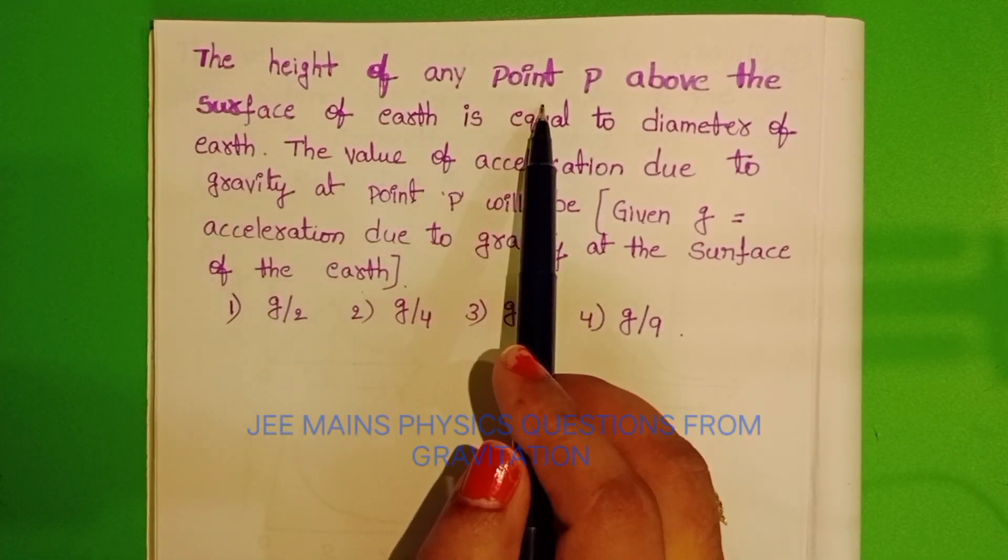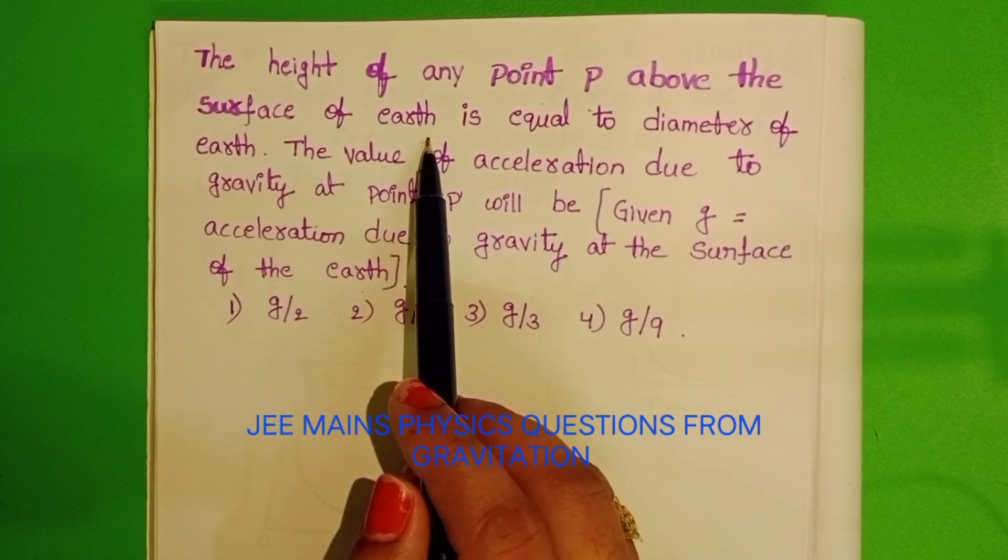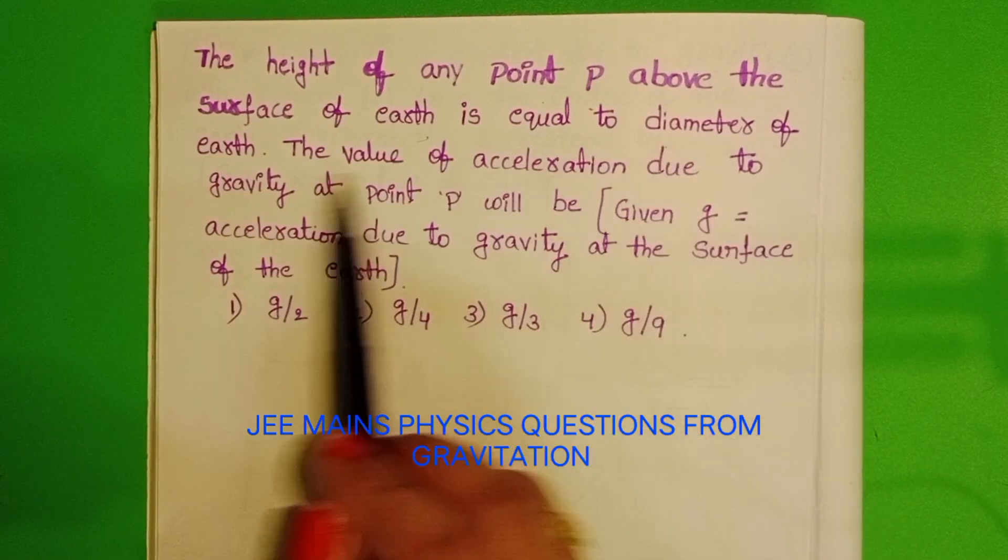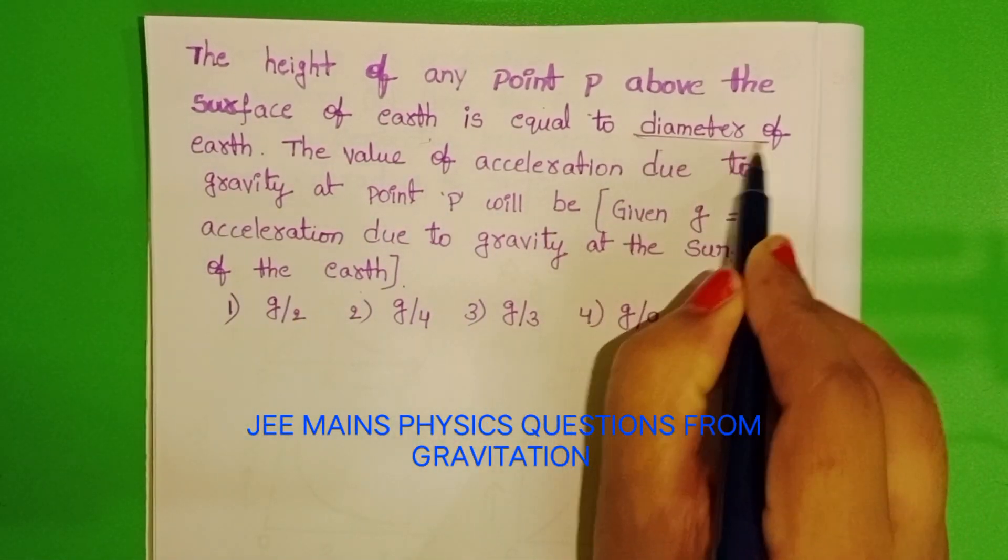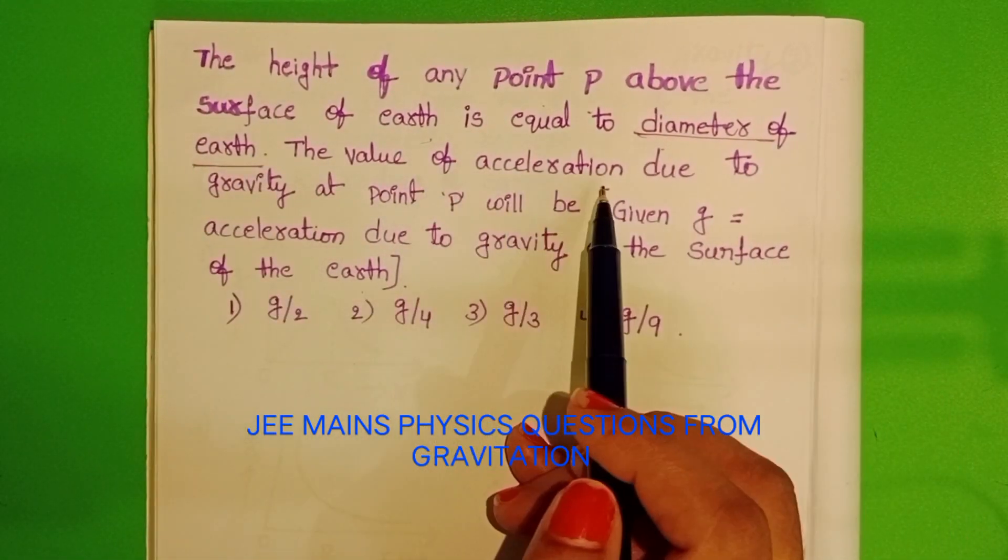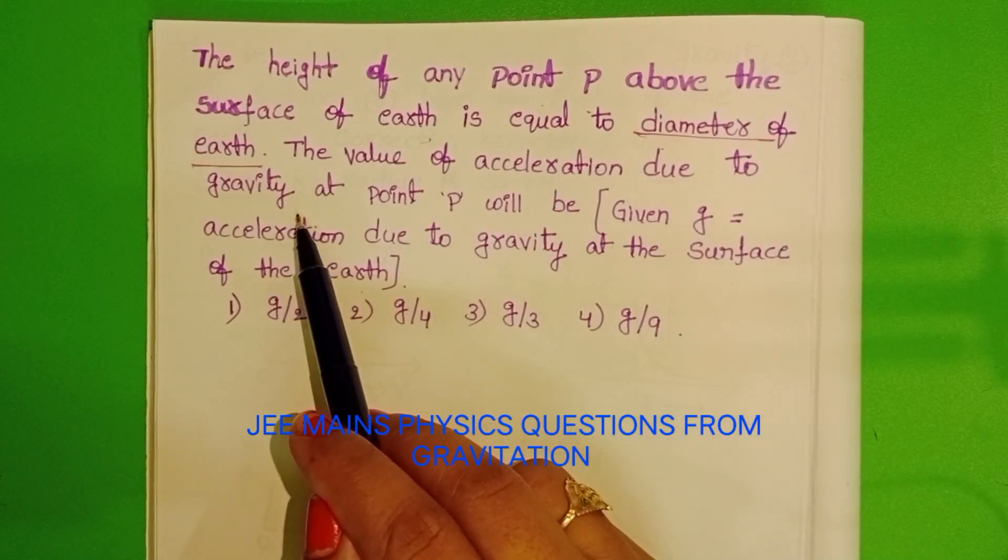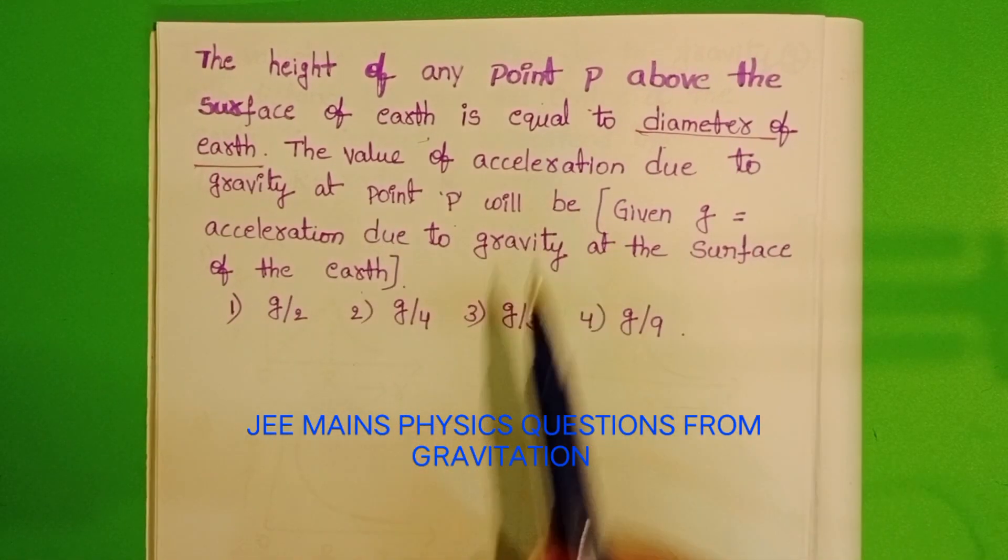The height of any point P above the surface of the earth is equal to the diameter of the earth. The value of acceleration due to gravity at point P will be.